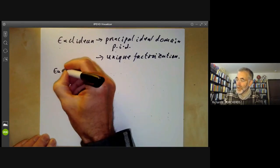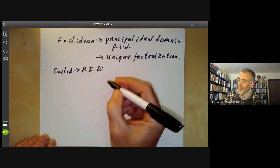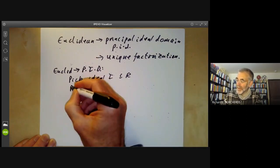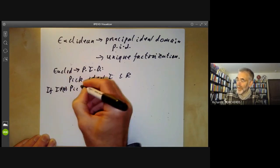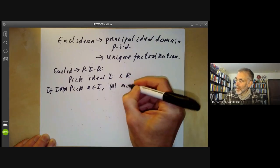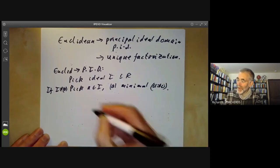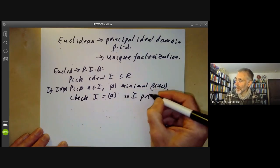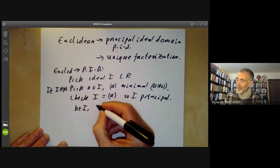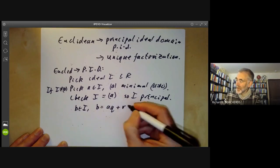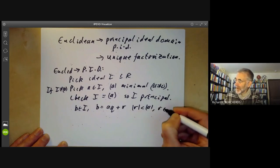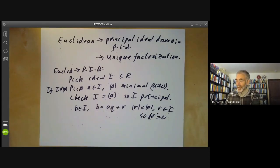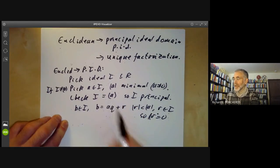To show that Euclidean implies principal ideal domain, what we do is pick an ideal I in R, and if I is not equal to the zero ideal, pick A in I with |A| minimal, given that A is not zero. Then we can check that I is generated by the element A, so is principal. If we take B in I, then we can write B equals A times Q plus R with |R| less than |A|, R in I, so R equals zero because A was minimal. So all ideals in a Euclidean ring are principal.